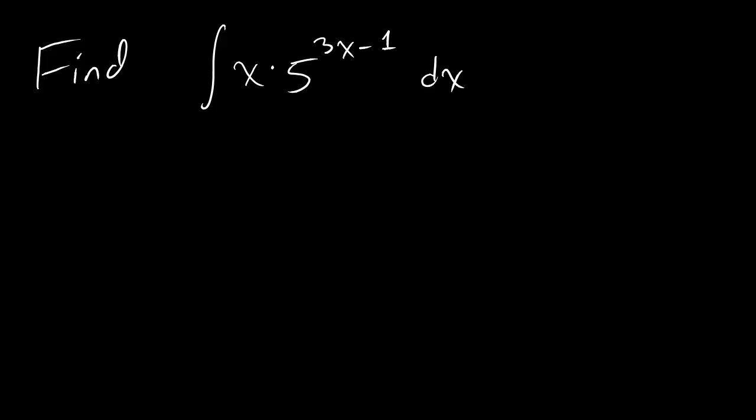As always, first you should think if you can solve this using normal rules, which you obviously can't, it's too freaking complicated. Then you should think about if you can do this using u substitution. And so you could basically say, look, there's an inside.